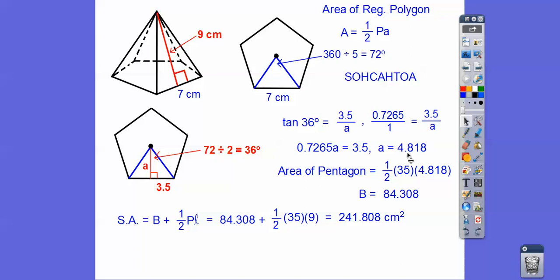So the area of that pentagon, which is our base, is one half the perimeter times the apothem right there. So we get 84.308.